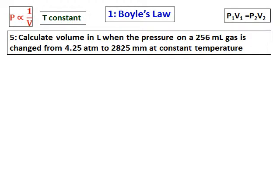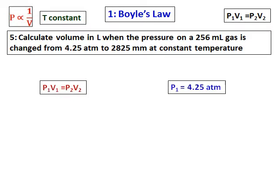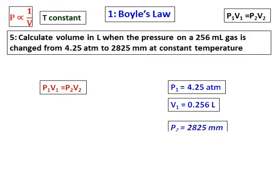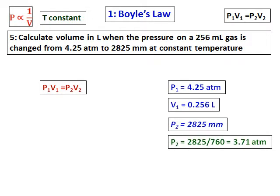Another question on Boyle's law: calculate the volume in litres when the pressure on a 256-millilitre gas is changed from 4.25 atmospheres to 2825 millimetres of mercury at constant temperature. Using P1V1 = P2V2, P1 is 4.25 atmospheres and the volume of 256 mL is converted to 0.256 litres. P2 of 2825 mmHg is divided by 760 to get the value in atmospheres.